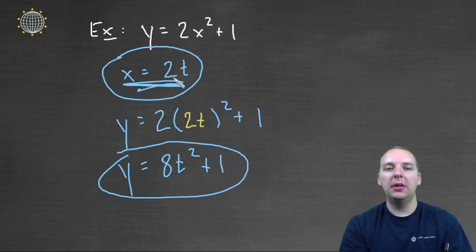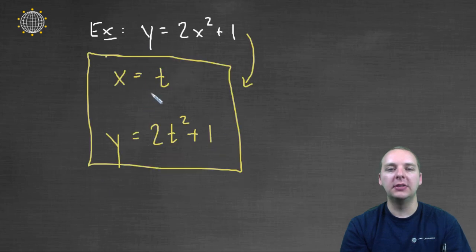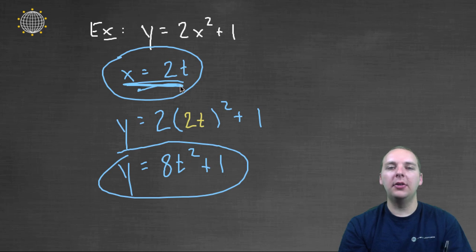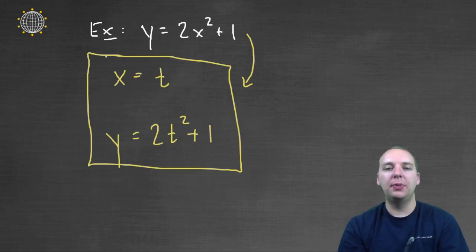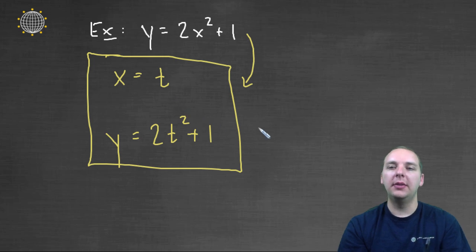Now what would be the practical difference between this parametrization versus this one? Well I kind of explained this one in an earlier video, this one might sketch out the curve faster or slower than this parametrization does. But it's still going to generate the same looking curve.